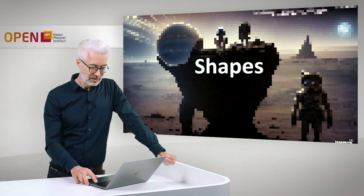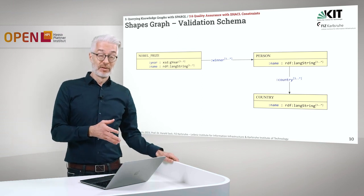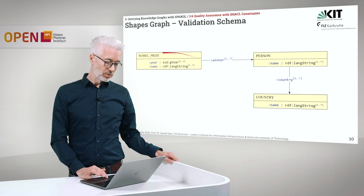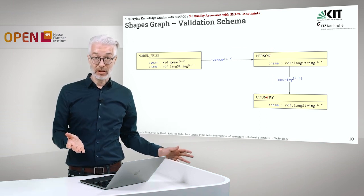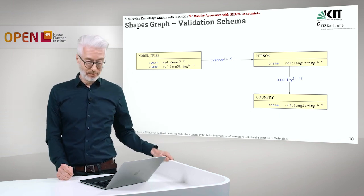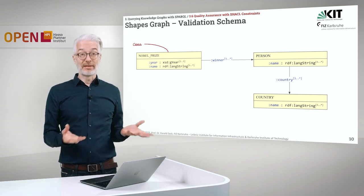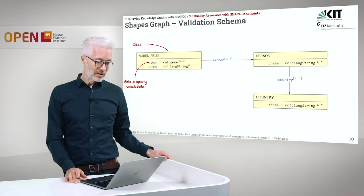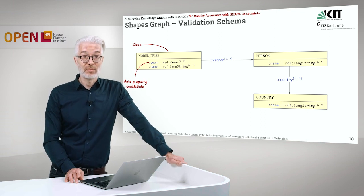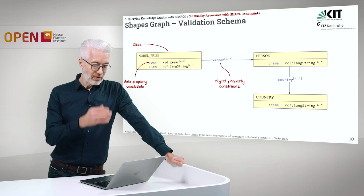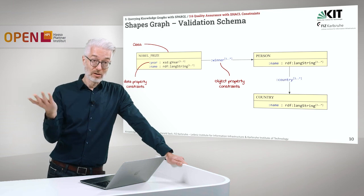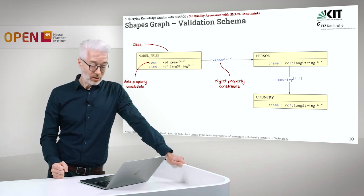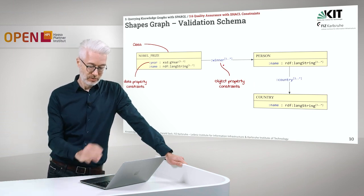For that, shapes in SHACL have been invented. A shape graph simply reflects a data structure and some conditions posed on that data structure. We see here a shape for Nobel Prize, a shape for Person, and a shape for Country. For the Nobel Prize shape, we have data property constraints: year has to follow a specific data type, as well as name. Then we have object property constraints — data properties connect a subject to a literal, object properties connect a subject to another entity.